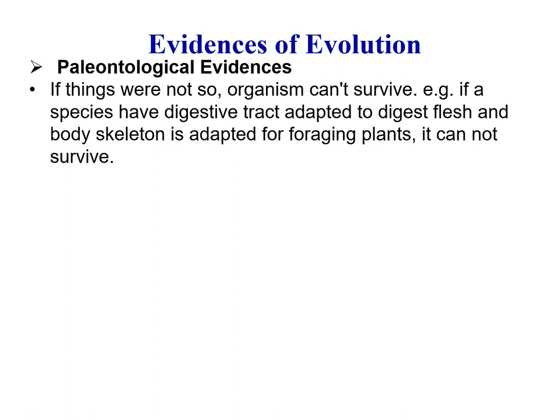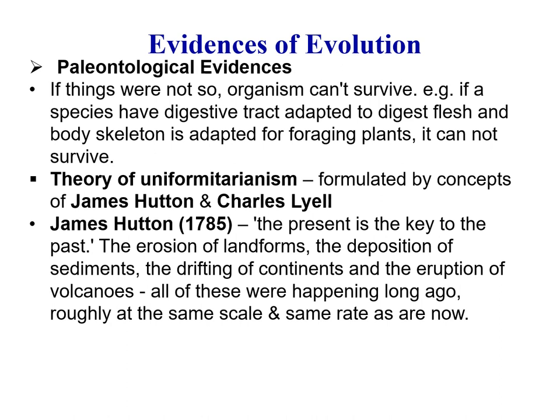If the skeleton is adapted for a carnivorous mode of life, its digestive system, its anatomy, and its physiology are also adapted for a carnivorous mode of life. So different organs are correlated, and the organism's body and its mode of life are correlated.